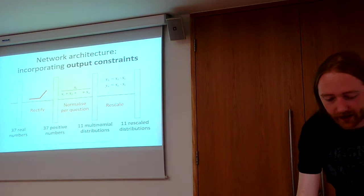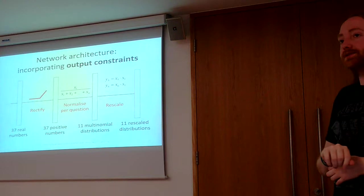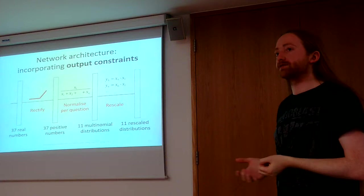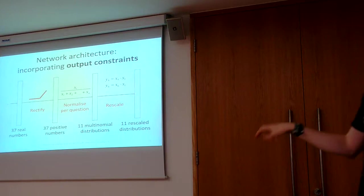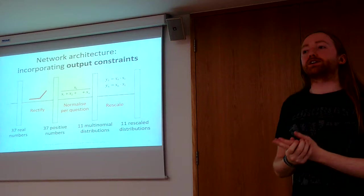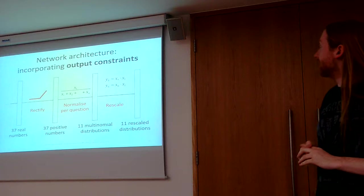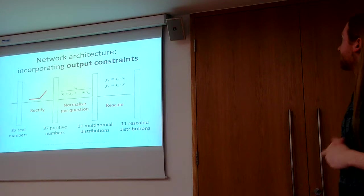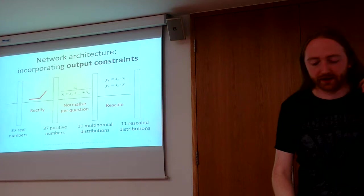And I did that as follows. So first I have this linear layer that provides the 37 real numbers. Then I apply rectification, so this is just ReLU basically. So I get 37 positive numbers because as you know probabilities are usually positive. And then I normalize these per question to get an actual multinomial distribution per question. And this is sort of a conditional distribution - given that this question is asked, what is the distribution of the answers? And then to get the final probabilities you just have to do some multiplications with the probabilities of the preceding answers, and then these probabilities will adhere to the output constraints.